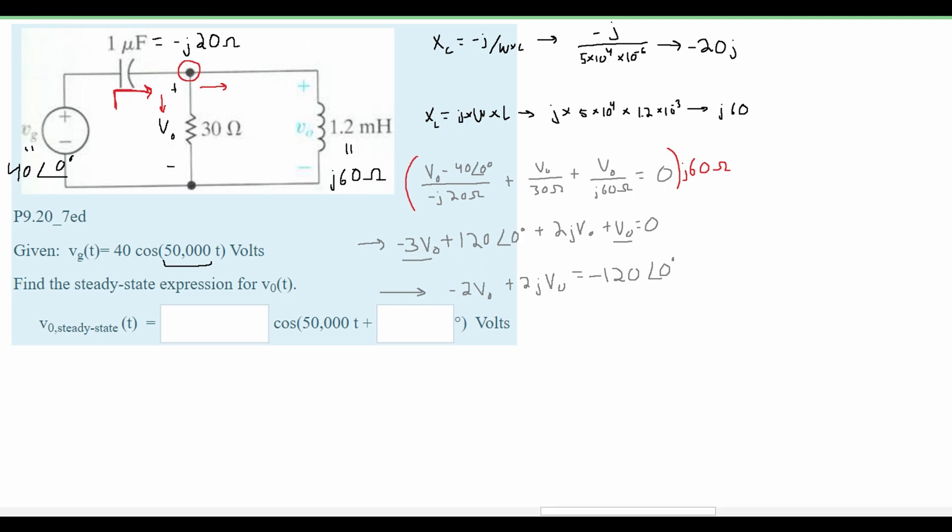Now we can divide everything by 2 and factor out our V₀s. And this is our new equation. Now all we need to do is take this part and put it in our phasor form so it will look something like this, and then divide both sides by this so we get our V₀ by itself.